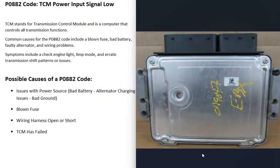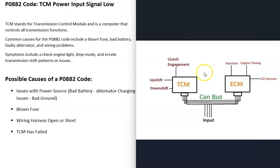There's a computer called the TCM, or transmission control module. All it does is control the functions for the transmission — telling it when to shift, when to upshift, when to downshift, engaging the clutch, regulating pressure to the solenoids. It gets input from sensors like speed sensors and works with other modules like the engine control module, which tells it the engine's RPMs.